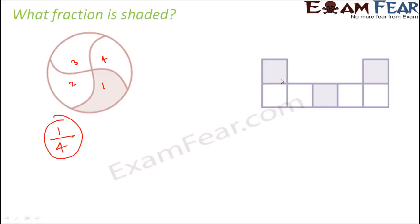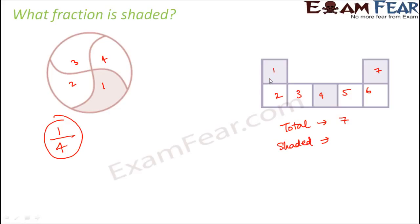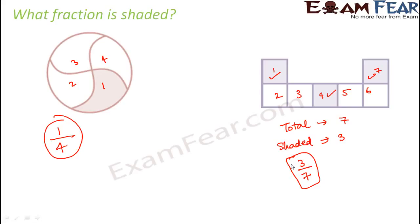In the next image, we see an arrangement of many squares. There are seven squares in total. How many of them are shaded? Three of them are shaded. So if we ask what fraction of this entire figure is shaded, three out of seven squares are shaded — so three-sevenths of this picture is shaded.